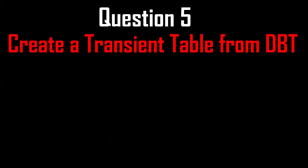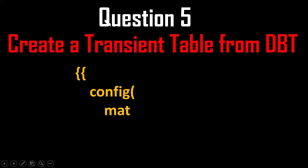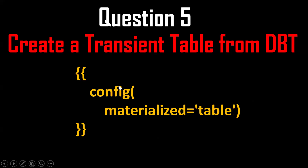The next question is: how to create a transient table in dbt? If you're working with dbt, you should know how to create transient and permanent tables. By using the config macro with 'materialized = table', a transient table will be created by default. So using the config macro, we are able to create a transient table.